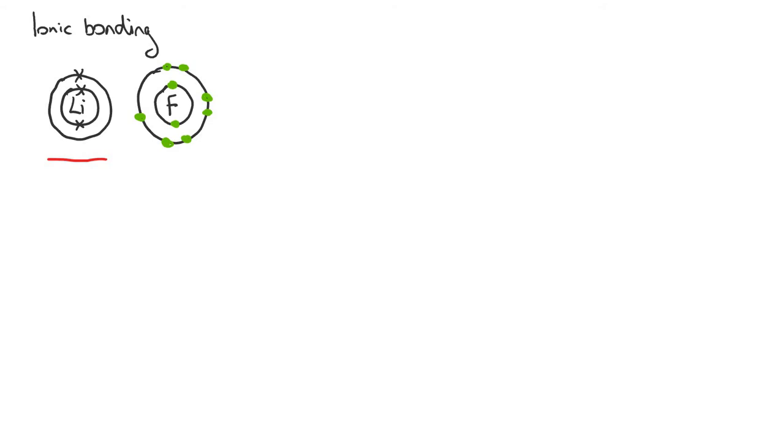So usually, metals lose all of the electrons in their outer shell, and non-metals, such as fluorine here, will gain electrons until they have a full outer shell.